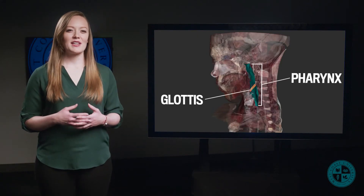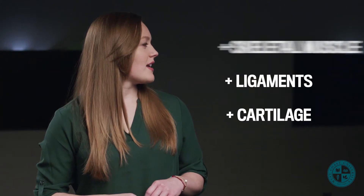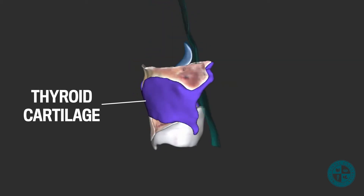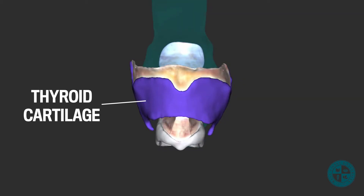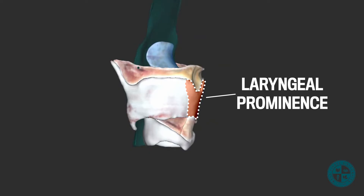After the air leaves the pharynx and passes through the glottis, it makes its way through the larynx. The larynx is composed of a lot of cartilage, ligaments, and skeletal muscle. The largest of the cartilages is referred to as the thyroid cartilage, which forms most of the anterior and lateral walls of the larynx and maintains the opening of the airway. We can also see the laryngeal prominence from this cartilage, which is commonly referred to as the Adam's apple.